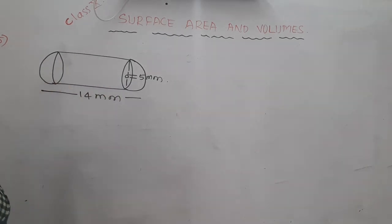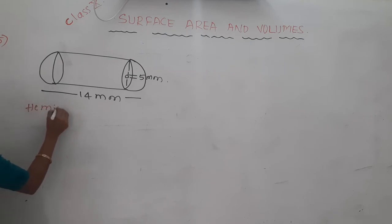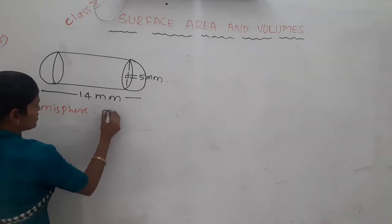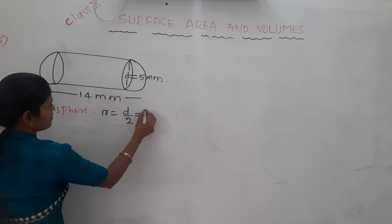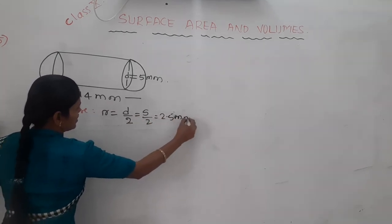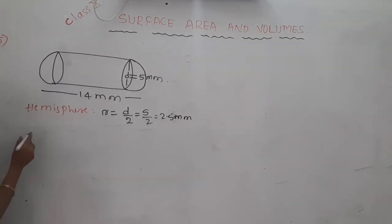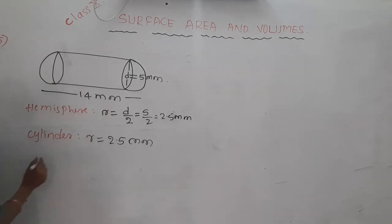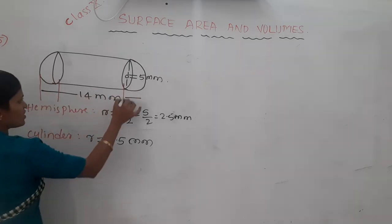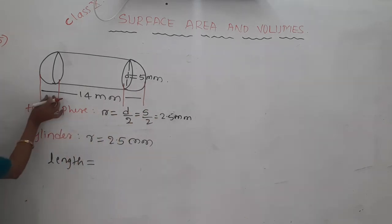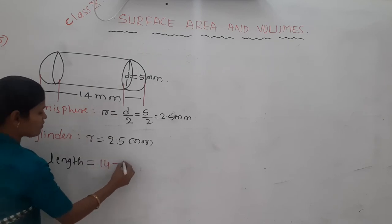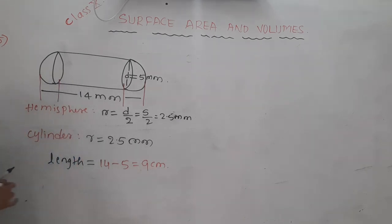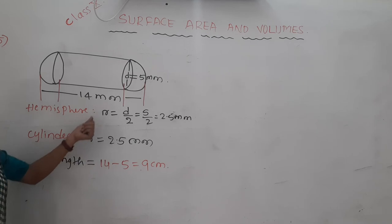For a cylinder, the radius is the same as the hemisphere radius: 2.5 mm. The length of the cylinder is the total length minus the two hemisphere radii: 14 − 2.5 − 2.5 = 9 mm. So the height of the cylinder is 9 mm, and the radius of the cylinder and hemisphere is 2.5 mm.